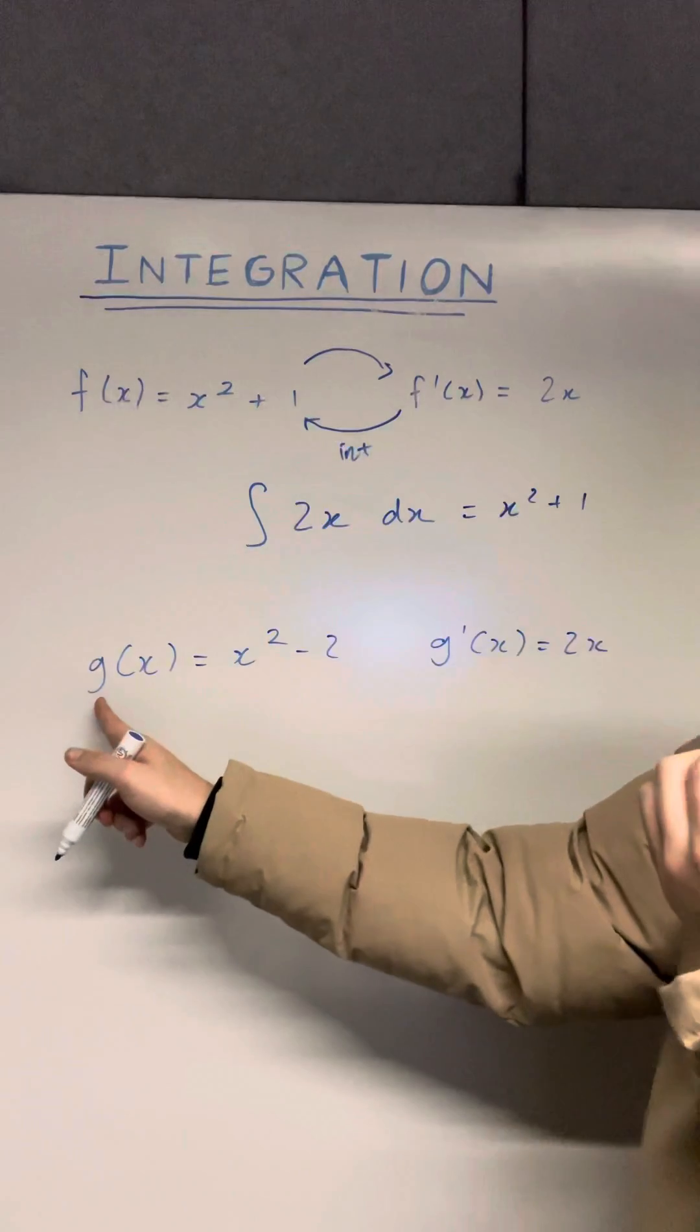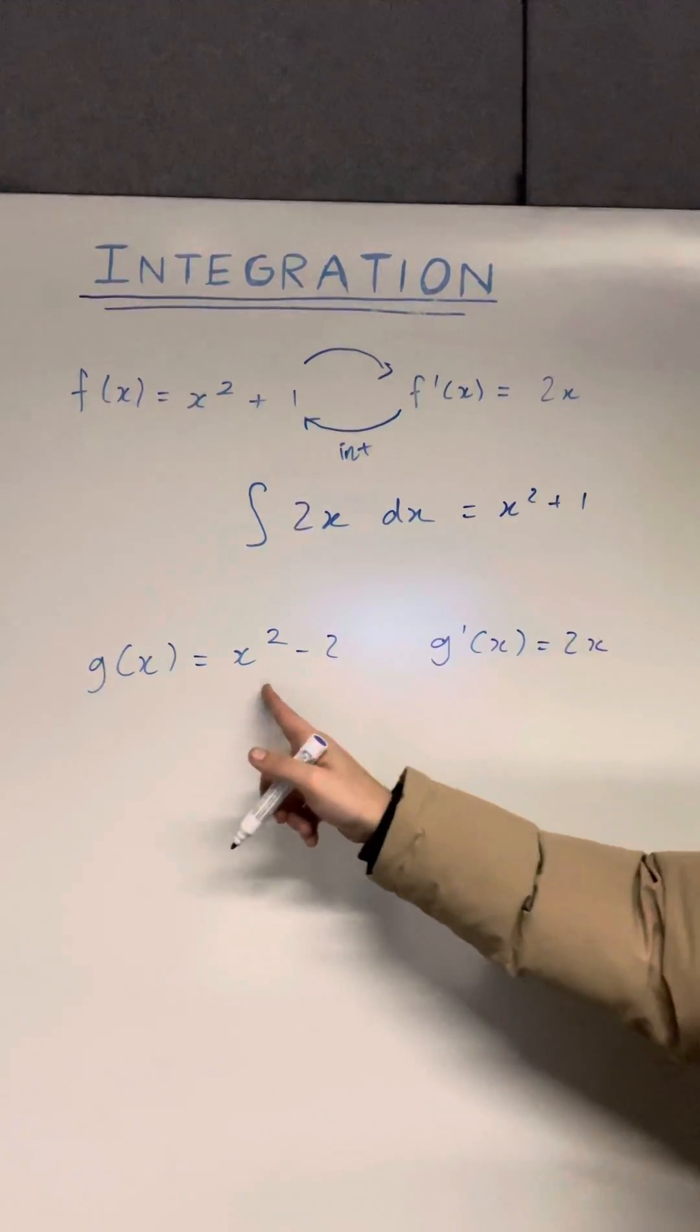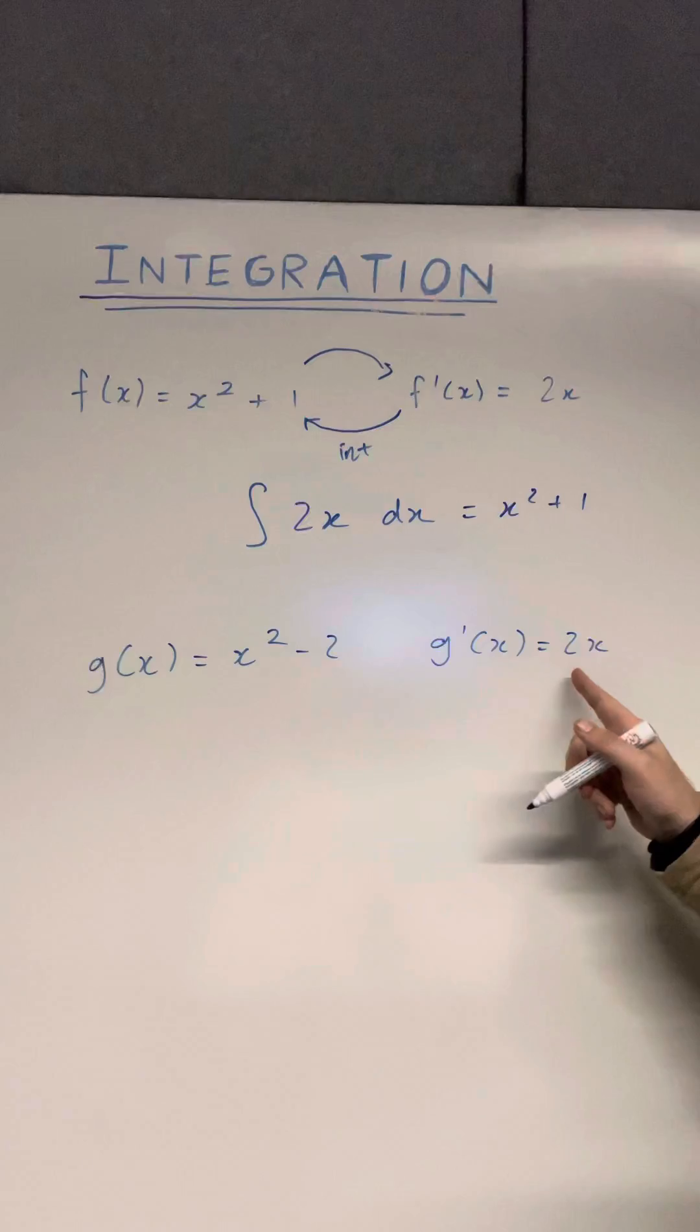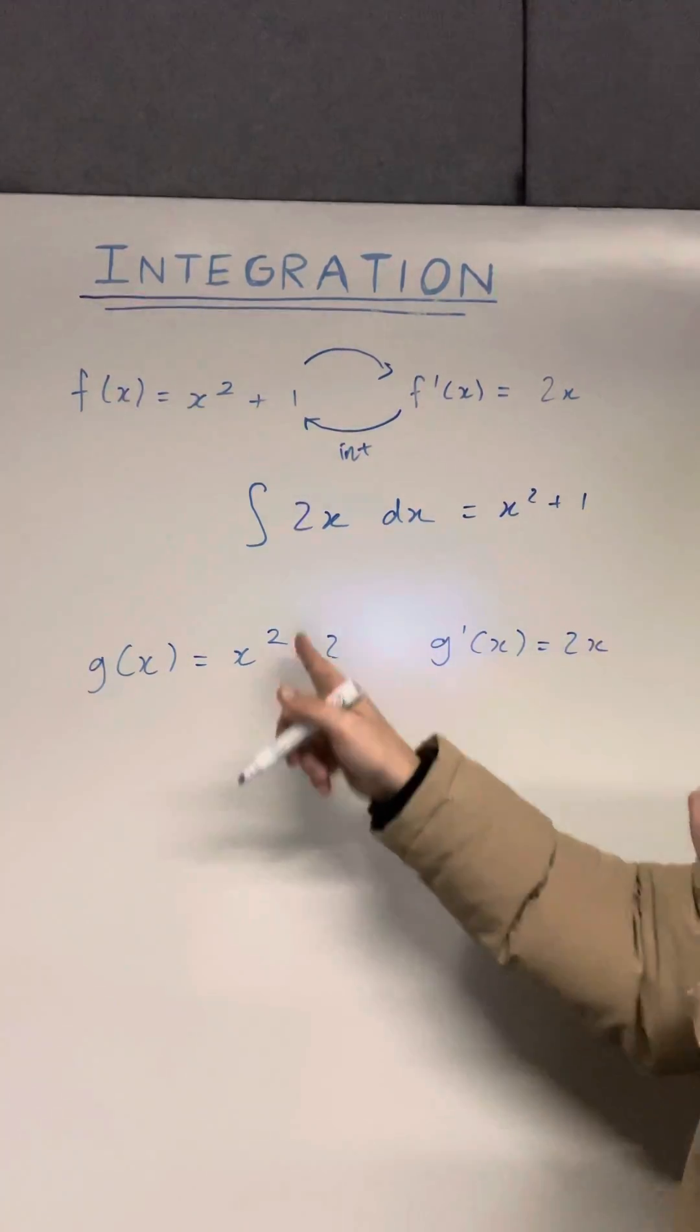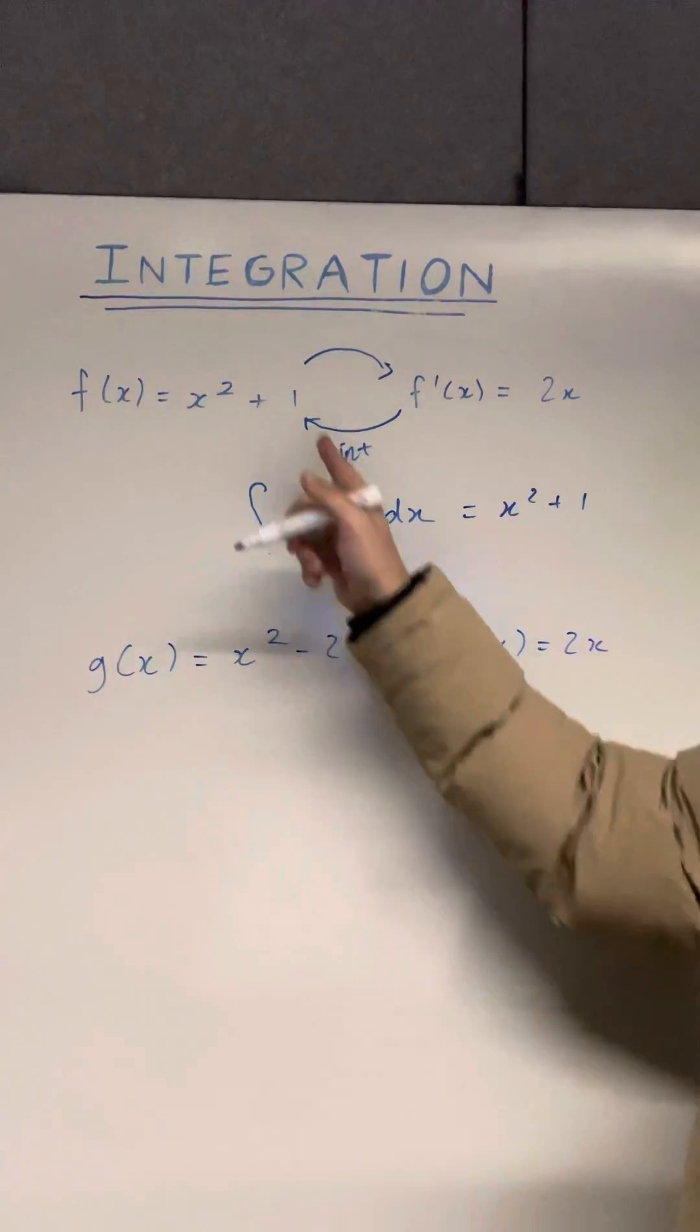Now what you can see is that we have another function here, g of x is equal to x squared minus two. Now the derivative of g is also equal to two x because the only difference between these two functions is the constant on the outside.